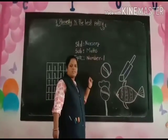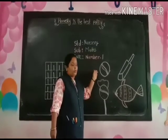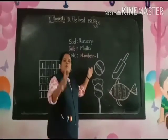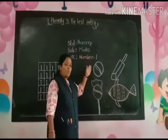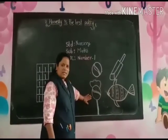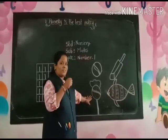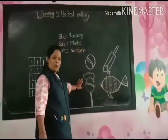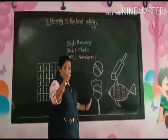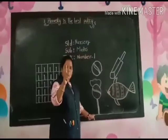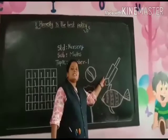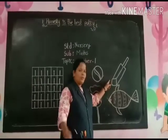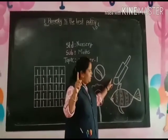Look here. What is this? This is a ball. How many balls here? One ball. How many balls here? One ball. What is this? This is a ball. How many balls here? One ball.